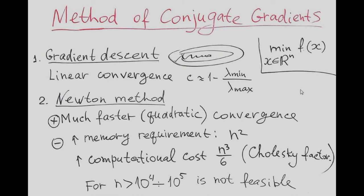We already discussed two methods for unconstrained minimization of smooth functions of several variables: gradient descent and Newton method.